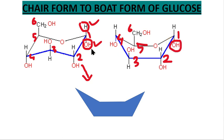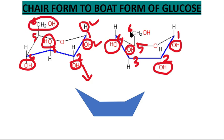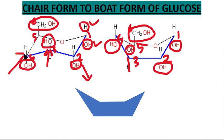The groups that are downwards in the chair form remain downwards in the boat form. The group on carbon 3 which is upwards remains upwards; the group on carbon 4 which is downwards remains downwards; and the CH2OH group on carbon 5 which is upwards remains upwards.